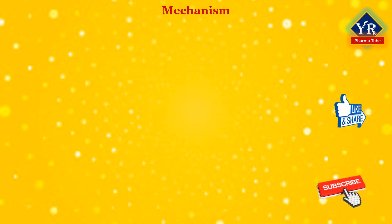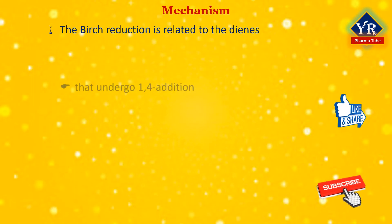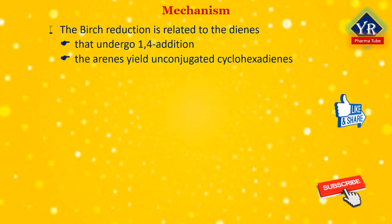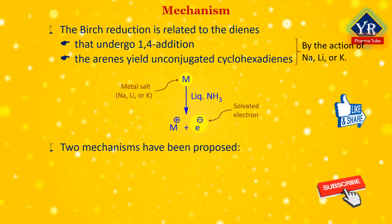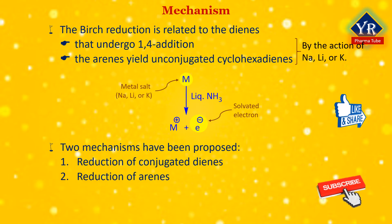Mechanism of Birch reduction reaction. The Birch reduction is related to the dienes that undergo 1,4-addition whereas the arenes yield unconjugated cyclohexadienes by alkali metals such as sodium, lithium, or potassium. The reaction occurs through the critical generation of an anion radical due to a single electron transfer from the alkali metal to the corresponding substrate. Two mechanisms have been proposed which are depicted here: number one, reduction of conjugated dienes, and number two, reduction of arenes.